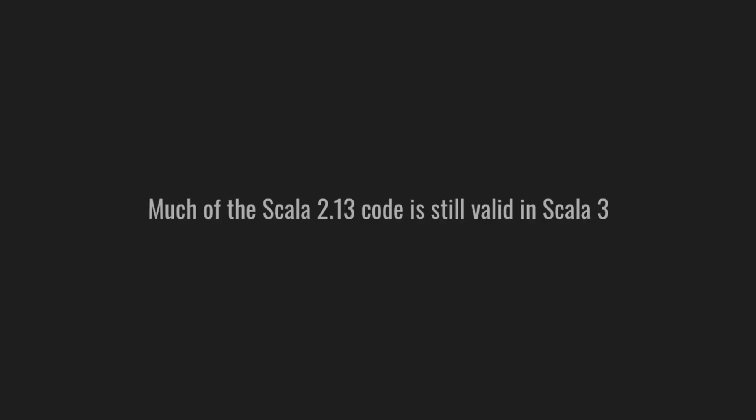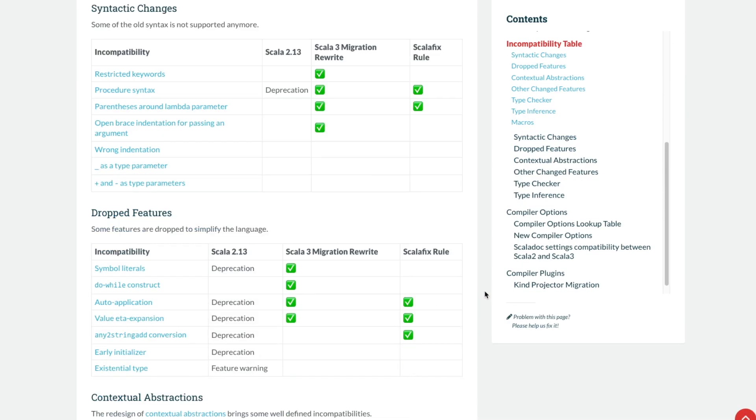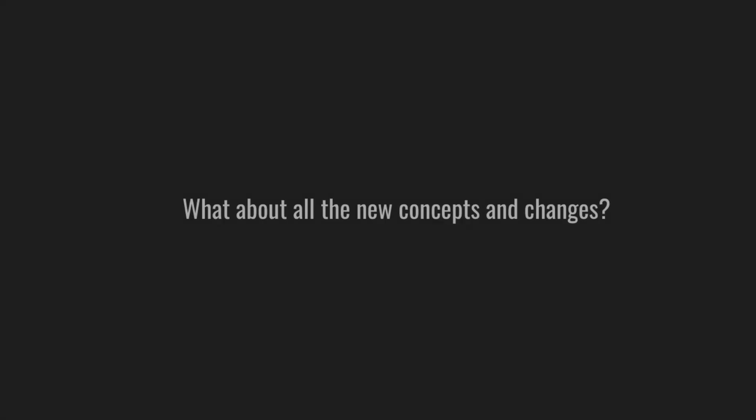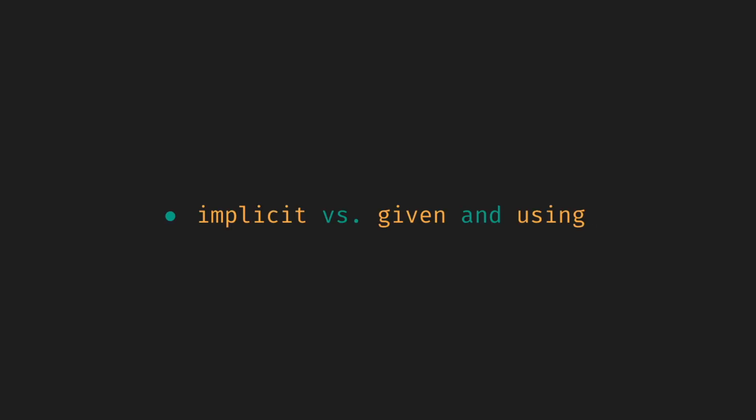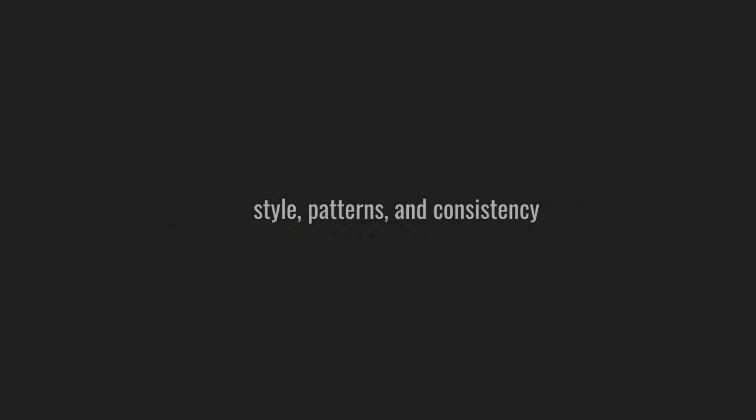Finally, let's talk about dealing with code. Much of the Scala 2.13 code is still valid in Scala 3. If you want, you can use the migration tools. Otherwise, you can copy-paste the code over and fix whatever's red — reviewing incompatibilities in the incompatibility table. You don't have to rewrite everything right away. You can keep using the implicit keyword instead of the new given and using keywords, and keep using ADTs in the form of sealed traits with case classes, refactoring to new enums when needed. However, it's an exceptional opportunity to think about style, patterns, and consistency, since code tends to replicate via copy-paste. You must decide whether to pay up front or take shortcuts and do a more significant refactoring later.